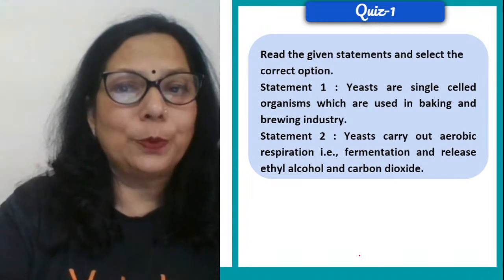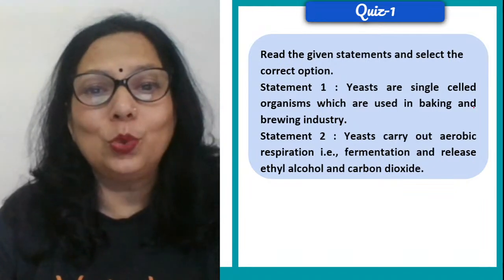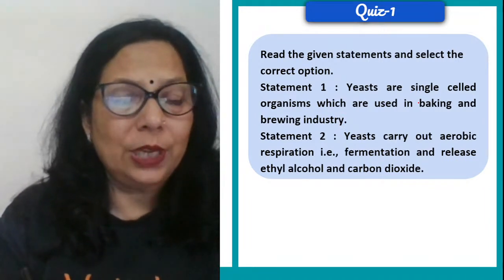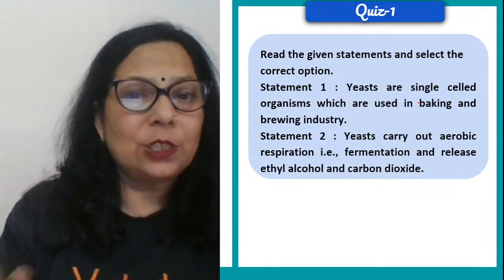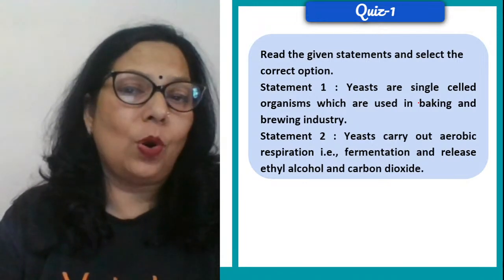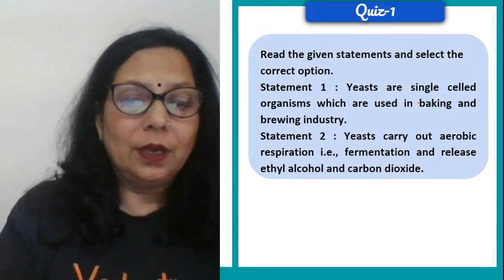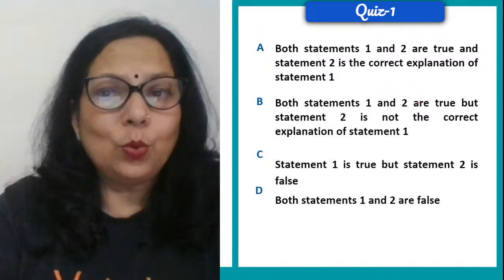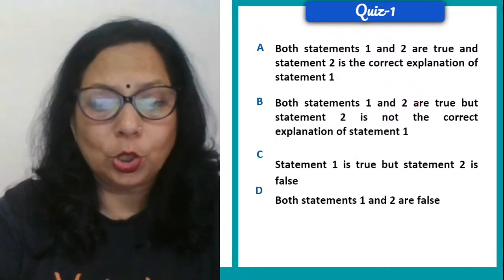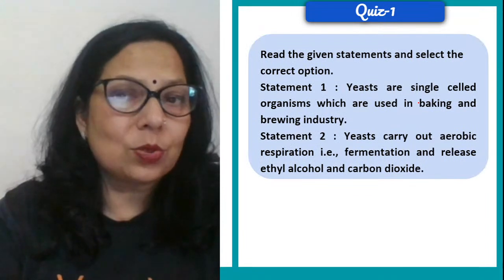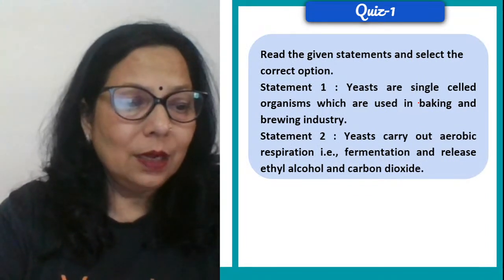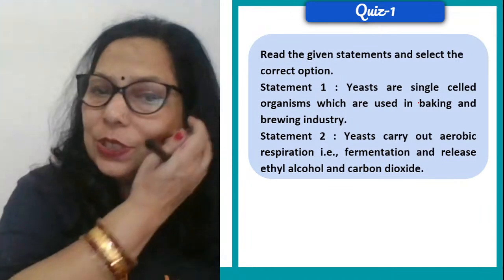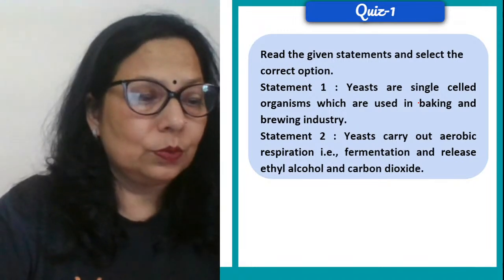Question 1: Read the given statement and select the correct option. Yeast are single-celled organisms which are used in baking and brewing industry. Yeast carry out aerobic respiration — that is fermentation — and release ethyl alcohol and CO2. Are both correct? Most of you are correct. The answer is: statement one is true, statement two is false. What is wrong in the second statement? Yeast carry out anaerobic respiration — it was written aerobic, which is wrong. Rest all was correct.